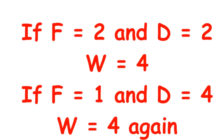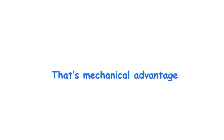If the force is equal to two and the distance is equal to two, the work would be four, since two times two is four. And if the force is equal to one and the distance is equal to four, work would also equal four. So it's the same amount of work but with less force — that's what Mechanical Advantage is all about.